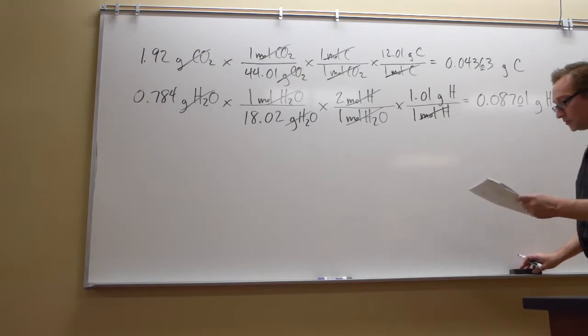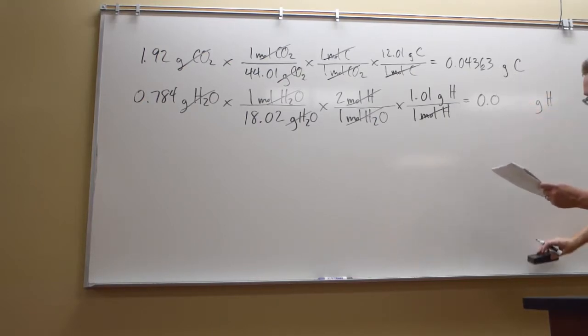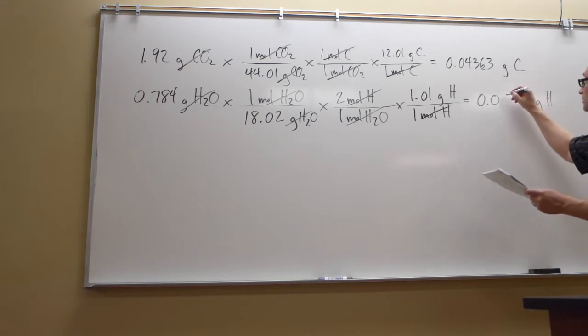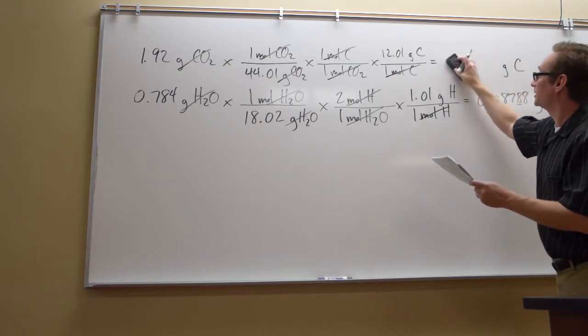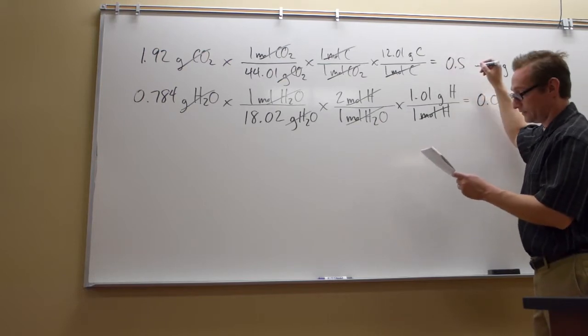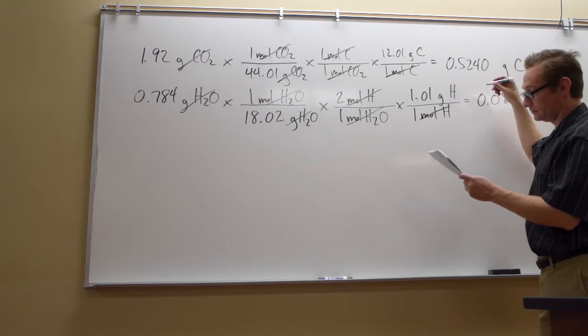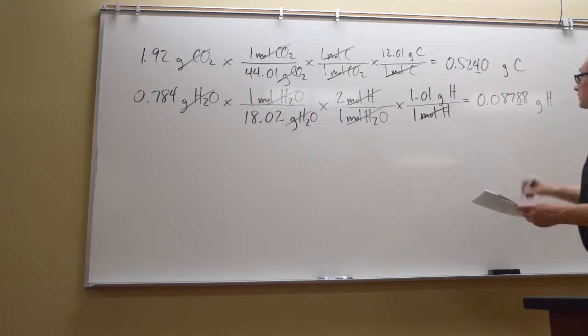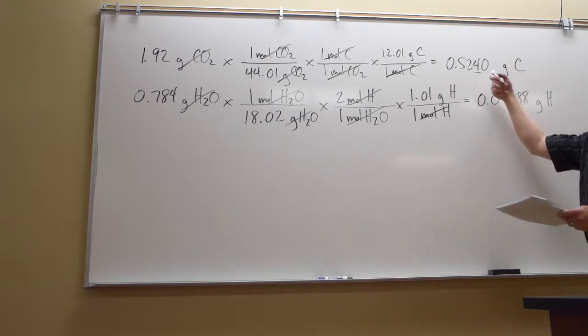Excuse me, that's moles, not grams. Copying the wrong numbers here. That's 0.08788 grams of hydrogen. And then I had the wrong grams of carbon here too. That would be 0.524 grams of carbon. So these are the correct grams of carbon and hydrogen.